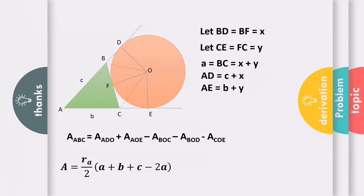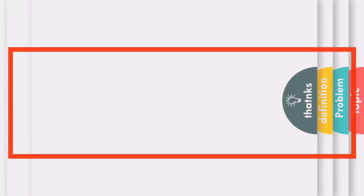We can further simplify this as R sub A all over 2 times (a + b + c - 2a). We can bring the one-half inside, so the area equals R sub A times (a + b + c) all over 2 minus a. Further simplifying, (a + b + c) / 2 is just the semi-perimeter. So our final area formula is the radius of the escribed circle times semi-perimeter minus the side that we did not extend.